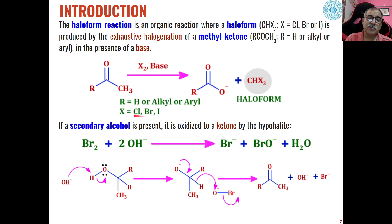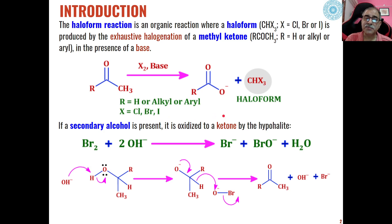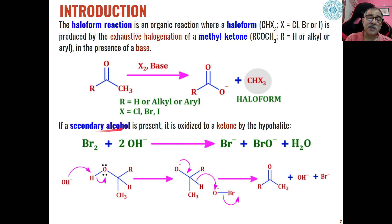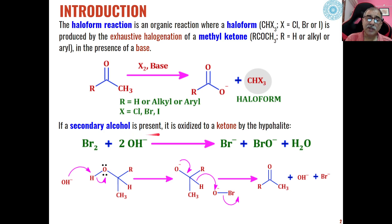The halogen which can be used is bromine and iodine, but we cannot use fluorine and fluoroforms cannot be synthesized through this method. This method is also useful for secondary alcohols, which can be oxidized to haloform if the ketone formed during the oxidation of the secondary alcohol contains a methyl group.